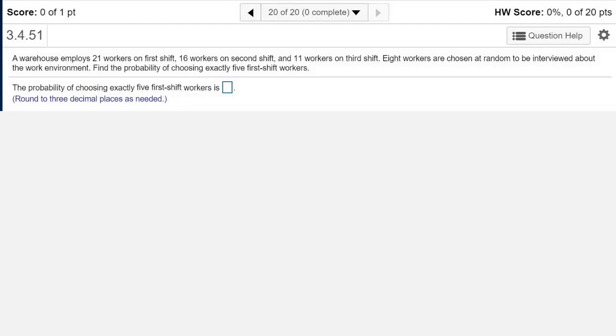A warehouse employs 21 workers on first shift, 16 workers on second shift, and 11 workers on third shift. Eight workers are chosen at random to be interviewed about the work environment. Find the probability of choosing exactly five first shift workers.